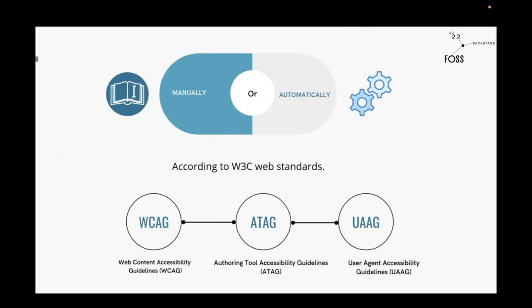We're also looking at the User Agent Accessibility Guidelines, which explain how to make user agents such as your browser or media player accessible to people. A quick example: using VLC in a public place — you're not physically challenged in any way, but because of the situation you're in, the noise might not allow you to hear properly. That's where most media players support audio translations and subtitles, so you can read the content being said without straining your ears.